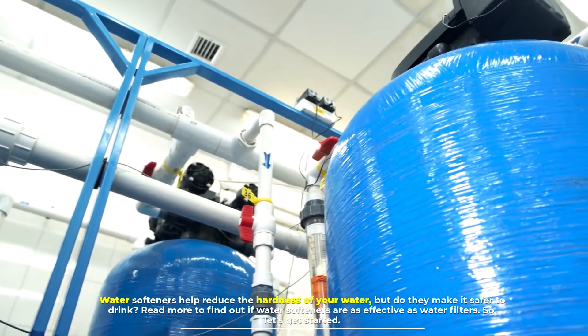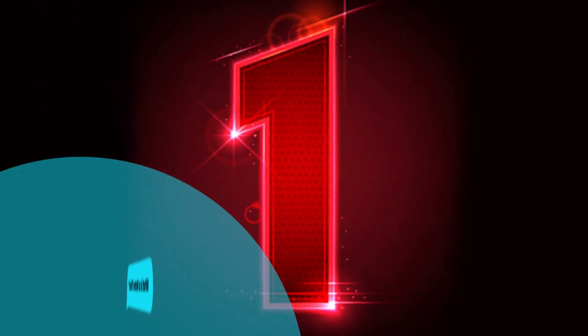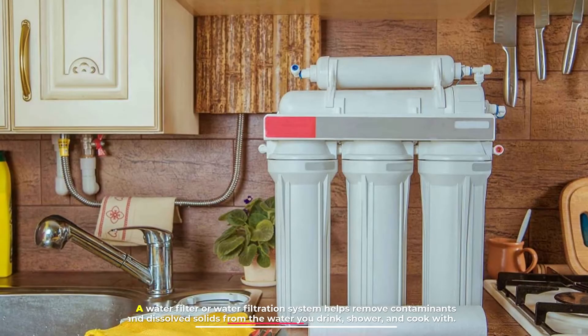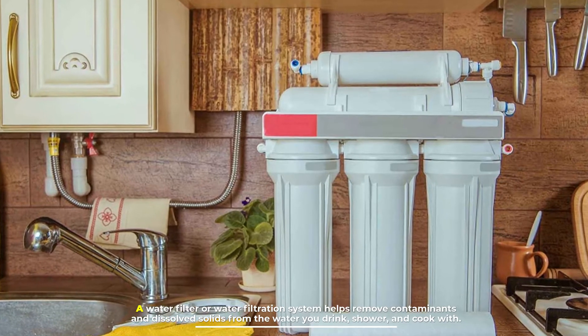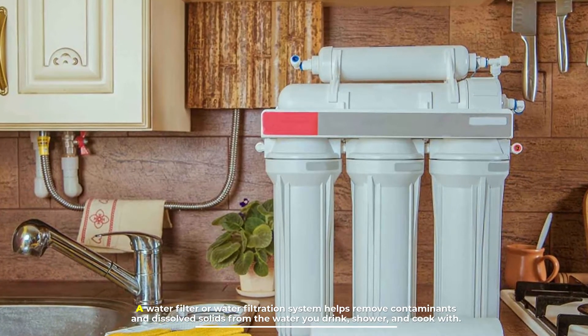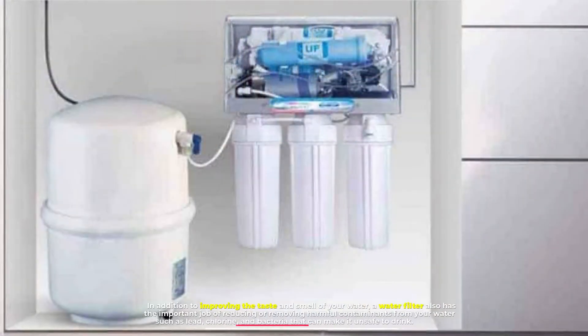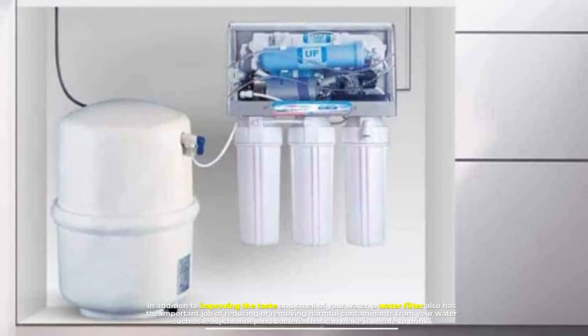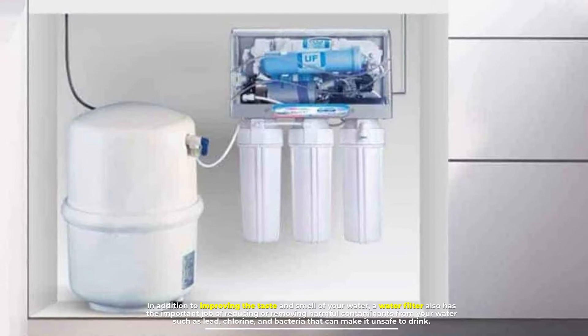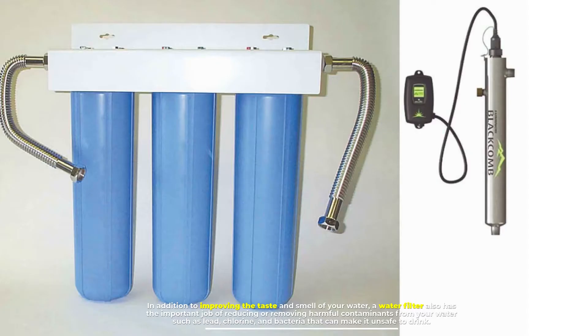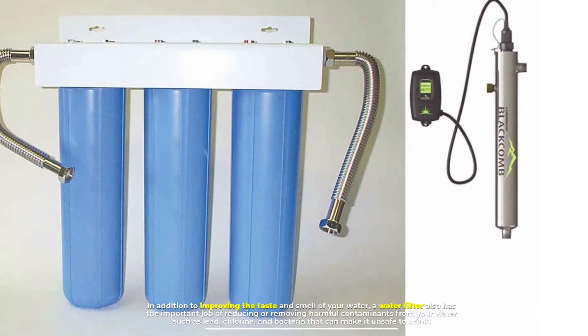Number one: What is a water filter? A water filter or water filtration system helps remove contaminants and dissolved solids from the water you drink, shower and cook with. In addition to improving the taste and smell of your water, a water filter also has the important job of reducing or removing harmful contaminants from your water such as lead, chlorine and bacteria that can make it unsafe to drink.